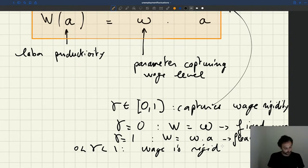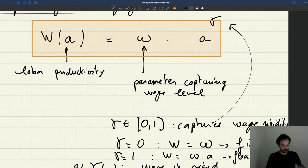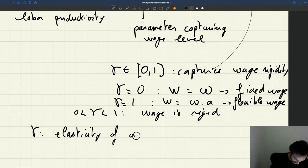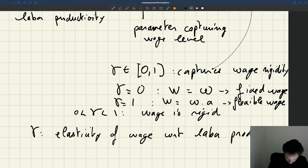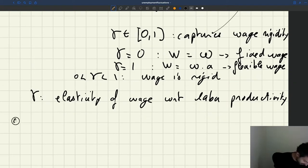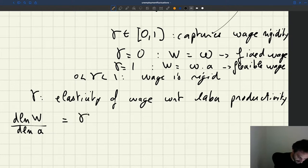But it turns out, so what's nice with that specification that we've just introduced, that the wage is omega times the productivity to the power of gamma, is that gamma is something that we can measure in the data. So gamma is the elasticity of the wage with respect to labor productivity. So why is it an elasticity? Well, that's because gamma, if we take the derivative of the log of the wage with respect to the log of productivity, the result is gamma. So that's why we have an elasticity here. That's the definition of an elasticity.